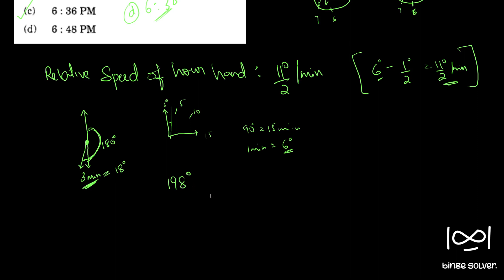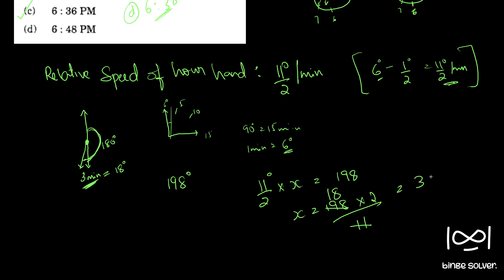So in total, using the relative speed concept, the minute hand must cover 180 + 18 = 198 degrees. Using relative speed of 11/2 degrees per minute: 11/2 × x = 198, so x = 198 × 2/11 = 36 minutes.